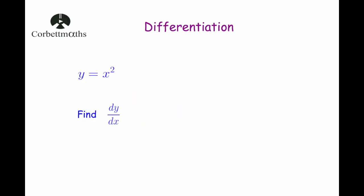Let's have a look at some questions now. Our first question: we've got y equals x squared, and we're going to find dy by dx. If you've watched the introduction to differentiation video, you'll already know that the answer is going to be 2x. Let's see why. We look at the power, which is 2, and we bring that down. So it's going to be 2x.